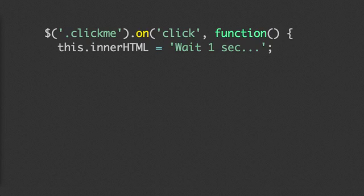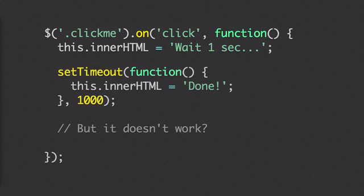I'm sure we've all written code that looks something like this. We've got a classic click handler, and inside of it we're referring to `this`. Now, `this` here refers to the element that triggered this handler. And inside of this handler, we might want to do something asynchronous — we've got a setTimeout here where we want to, one second later, update the content of this element. Except that second reference to innerHTML doesn't seem to work. The text doesn't update.